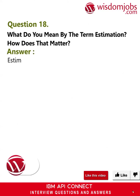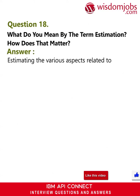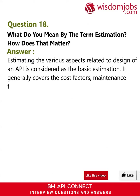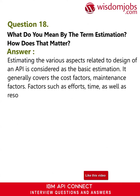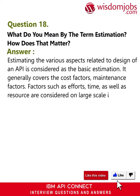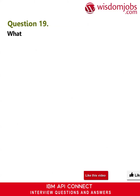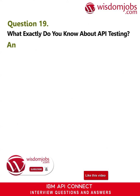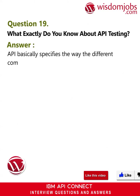Question 18: What do you mean by the term estimation and how does it matter? Answer: Estimating the various aspects related to the design of an API is considered as basic estimation. It generally covers cost factors and maintenance factors. Factors such as effort, time, as well as resources are considered on a large scale in this approach.